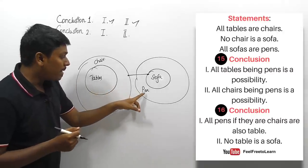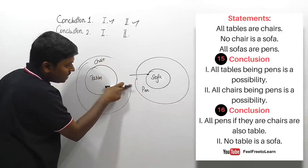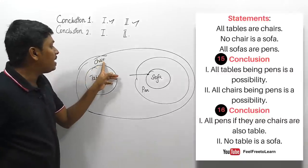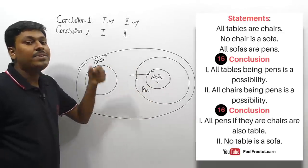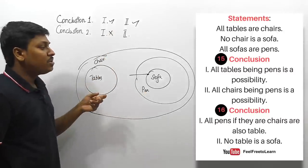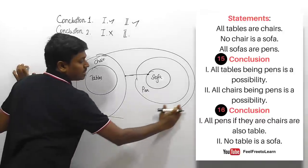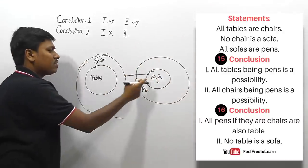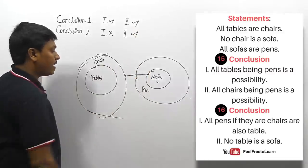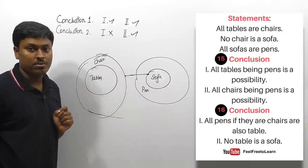Second set, conclusion one: 'all pen if there are chairs' — for this to work, all pens should be chairs, but chair and sofa cannot be linked, making this not possible. Conclusion one does not follow. Conclusion two: 'no table is a sofa' — there is no possible connection between sofa and table, so no table is sofa is exactly correct. Conclusion two follows. For this question: first set both follow, second set conclusion two alone follows.